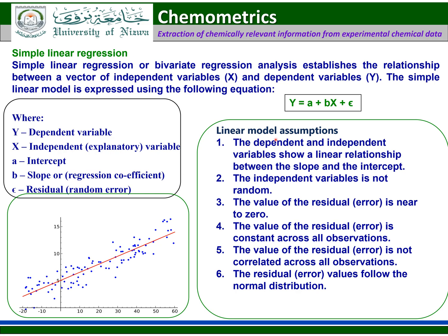Linear model assumptions — there are six fundamental assumptions. First, the independent variables show a linear relationship between the slope and the intercept. Second, the independent variable is not random. Third, the value of the residual error is near to zero. Fourth, it is constant across all observations. Fifth, the value of the residual error is not correlated across all observations. Sixth, the residual error values follow the normal distribution.